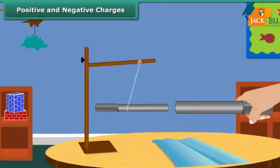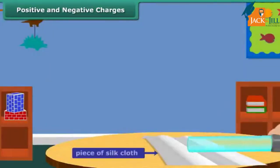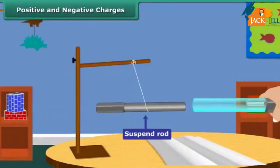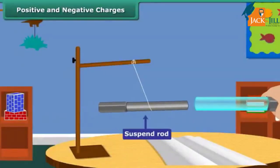Now take a glass rod and rub it with a silk cloth. Bring this glass rod close to the charged suspended ebonite rod. What do you observe now? The suspended ebonite rod comes closer to the glass rod. The charges produced in the ebonite and the glass are different in nature.